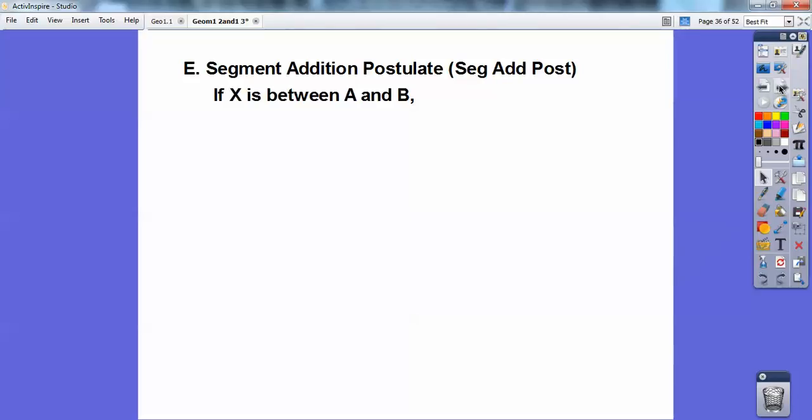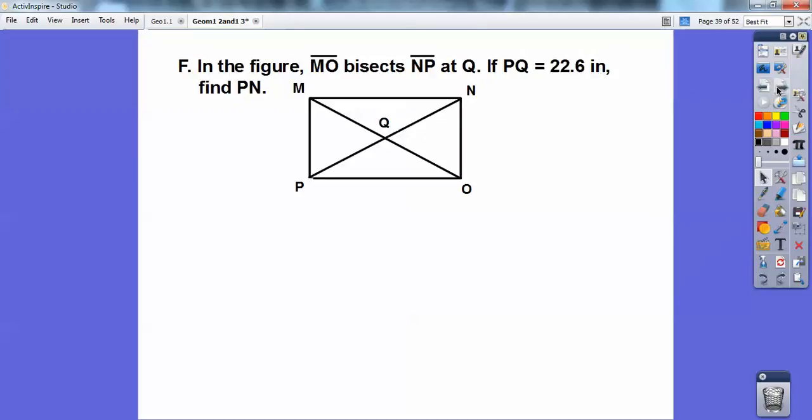Segment addition postulate. So if X is between A and B, can you see X between A and B on segment AB? If that's the case, then what this is going to say is that this little piece right here, segment AX, plus, I'm sorry, the length of AX, plus the length of XB is going to be the length of the whole AB. And I always say this piece plus this piece equals the whole piece. So that's what segment addition postulate says. Piece plus piece equals whole piece. AX plus XB equals the whole AB. All right, I wish I could get up there in front of it and show you with my hands.